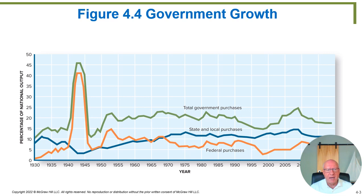Adding orange and blue gives the green line — the total government spending as a percentage of the economy. Starting in the 1930s, federal spending starts to rise as a percentage of the economy while state and local declines into the 1940s. The 1940s is the time of World War II, so federal spending skyrockets, almost reaching half of the entire U.S. economy being processed through the government to fight the war.